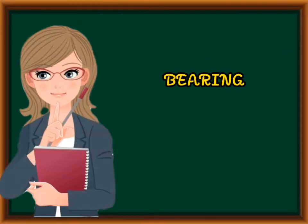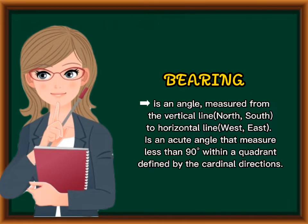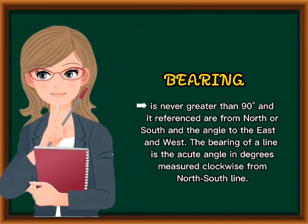So what is bearing? Bearing is an angle measured from the vertical line north-south to the horizontal line west-east. It's an acute angle that measures less than 90 degrees within a quadrant defined by the cardinal directions. Bearing is never greater than 90 degrees, referenced from north or south and the angle to the east and west. The bearing of a line is the acute angle in degrees measured clockwise from the north-south line.